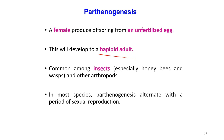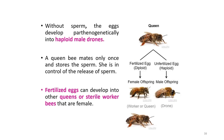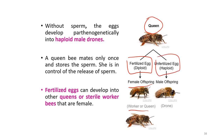Let's look at parthenogenesis in bees. The queen lays eggs. Fertilized eggs are diploid and turn into female offspring, which become workers or queens. Unfertilized eggs, which are in a haploid condition, produce male offspring known as drones.